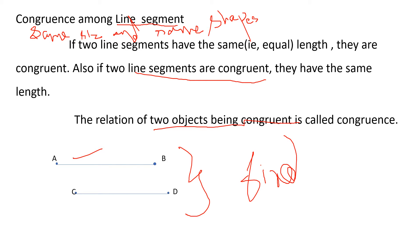AB is congruent to CD. Why? Because their measurements are equal, so we can say it is congruence. Just keep in mind - do not get confused. If two line segments have the same measurement or same length, we can say they are congruent. AB is congruent to CD.